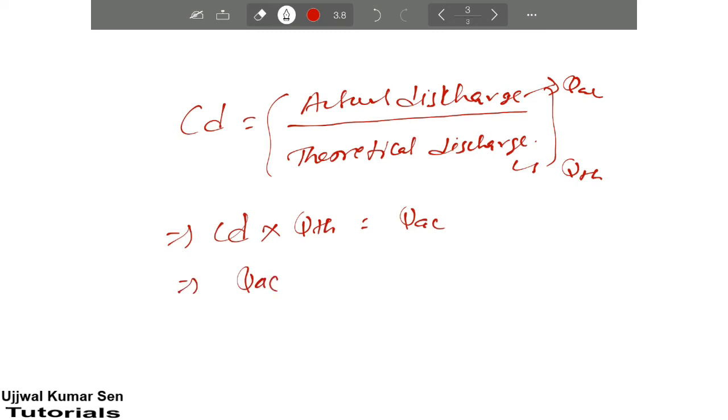Therefore, Q ac, now we will put the value of Q th, that is a1 a2 root under a1 square plus a2 square into root under 2gh. So this is the formula which is really useful in case of Venturi meter.